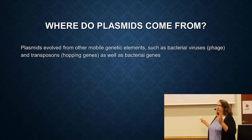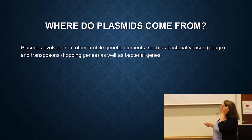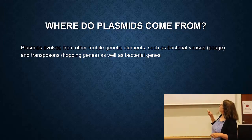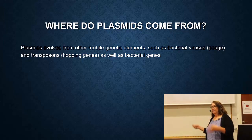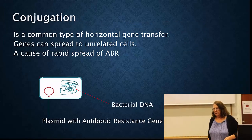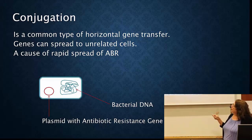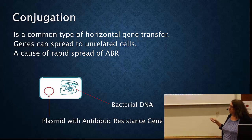You might ask where these plasmids come from — they evolve from other types of mobile elements, such as bacterial viruses and transposons. Transposons are hopping genes that can hop around, as well as ordinary bacterial genes. I'm talking about plasmids so much because they are actually the major way in which antibiotic resistance spreads, through a mechanism called conjugation. Conjugation is incredibly common and can cause genes to spread to unrelated cells.